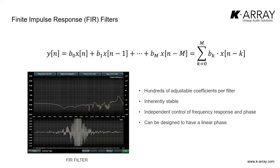Believe it or not, if you choose those 400 coefficients — or however many the filter features — in the proper way, you can create any transfer function you want: a shelving filter, a peaking filter, a notch, a Butterworth, a high-pass, a low-pass — just change those coefficients. But you can also get something far more complex than that, like the transfer function shown in this drawing, which represents a single FIR filter. FIR filters are extremely powerful because they can manage amplitude and phase with extremely high frequency resolution, independently of each other.